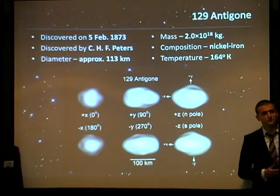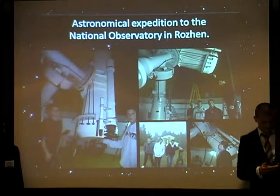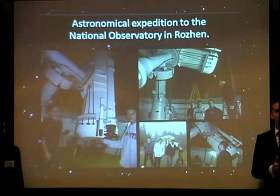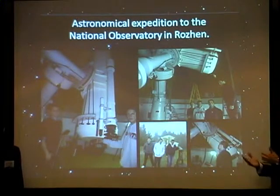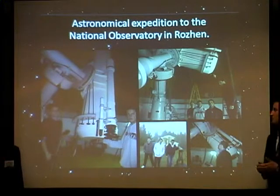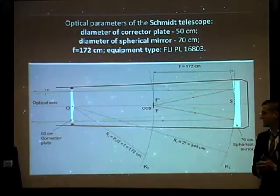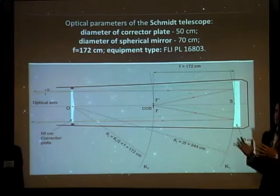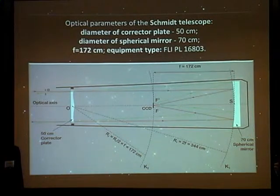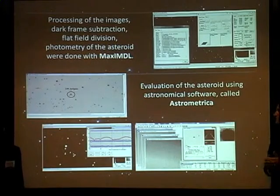The asteroid we chose is 129 Antigone, and there is an abundance of detailed information about it. Our team was incredibly interested in learning about professional astronomy, and we participated in observations we made at our national Bulgarian observatory in Drogene. We used the large Schmidt telescope for our observations of the asteroid. You can see the asteroid — the diameter of its spherical mirror is 70 centimeters. We processed our images using MaxIm DL professional software, and we found the asteroid using the Astrometrica software. You can see screenshots of our work.